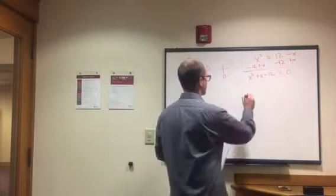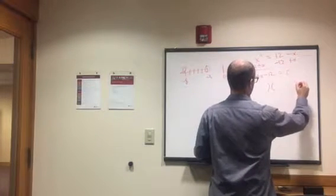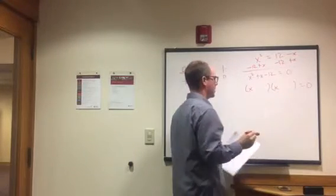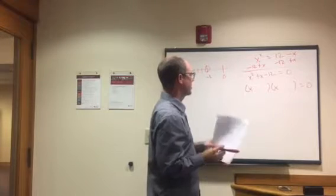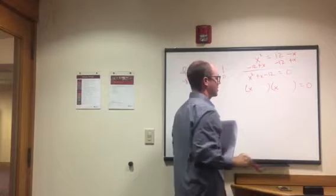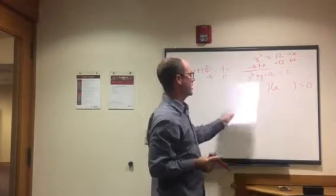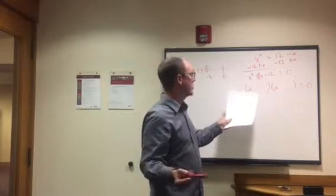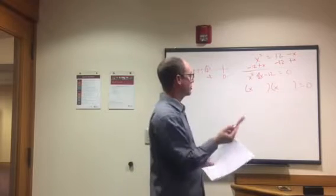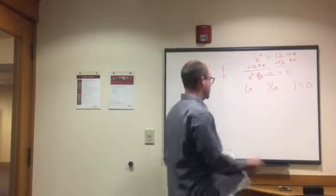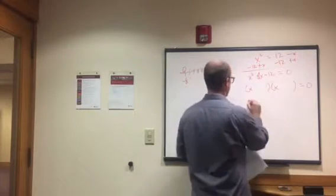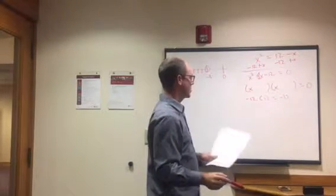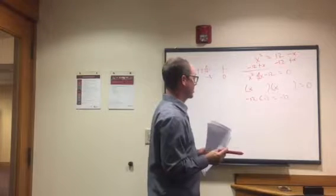Now set this up with two sets of parentheses like before, each starting with x. We have negative 12 here, so we need two numbers that multiply to negative 12 and add up to 1 — because the coefficient of x is 1 (one x and x are exactly the same). Since the product is negative, one number will be negative and one positive. If we try negative 12 times 1, that equals negative 12, but negative 12 plus 1 is negative 11 — no good.